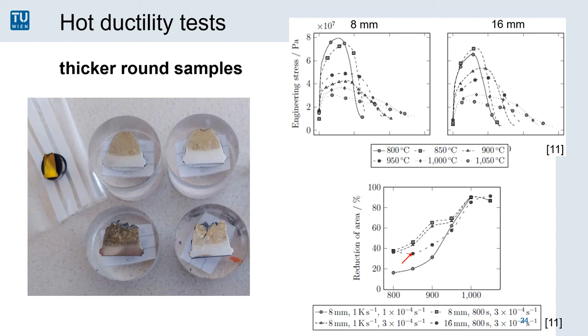Because the tensile strength at high temperatures decreases as well, the forces acting on the samples are very manageable. Predictably, the stresses stay more or less unchanged between the eight millimeter samples on the left and the 16 millimeter samples on the right. But the hot ductility in the bottom diagram is noticeably worse between 850 degrees and 900 degrees Celsius.